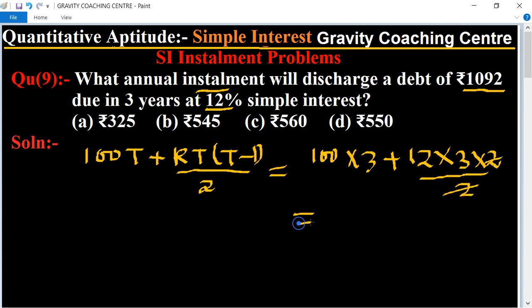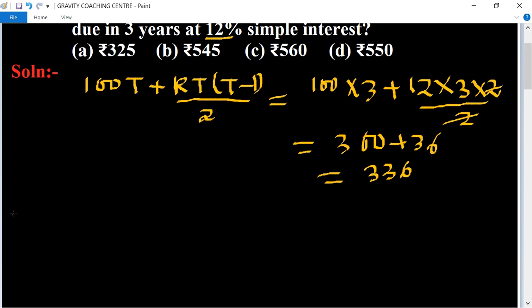So 300 plus 36, total amount is 336. Therefore, annual installment equals annual installment equals...